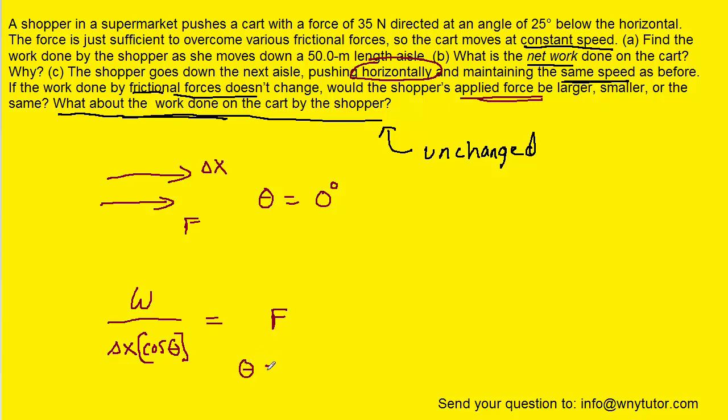We can see that the cosine of the angle appears in the denominator of this expression. When the angle was 25 degrees as it was in part A, we would have the cosine of 25. When the angle in part C is zero degrees, we would have the cosine of zero.